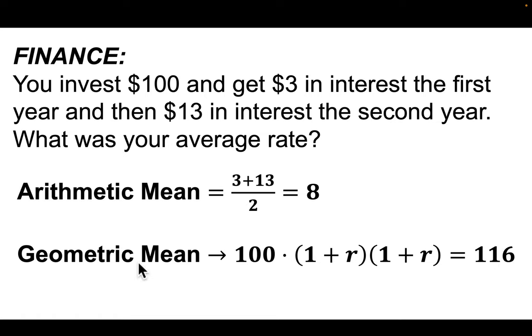And that's what this mean would tell you. It would say, what would the average interest rate need to be each year so that after two years, we do have $116? So if you solve this equation, you do 116 divided by 100, and then take the square root of that because 1 plus R is being multiplied by itself, right?